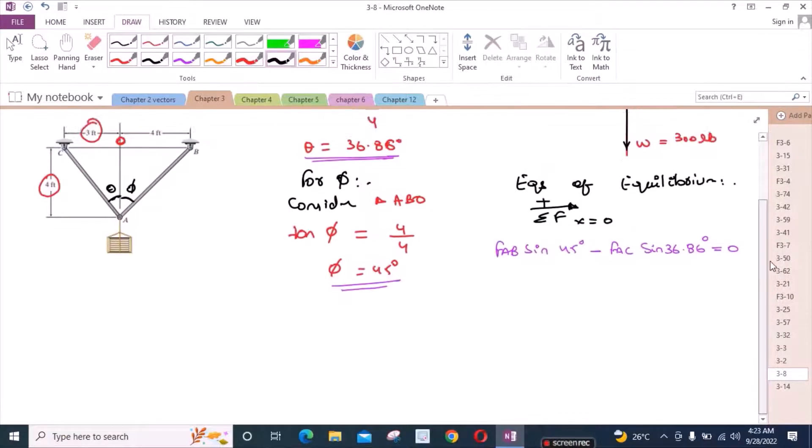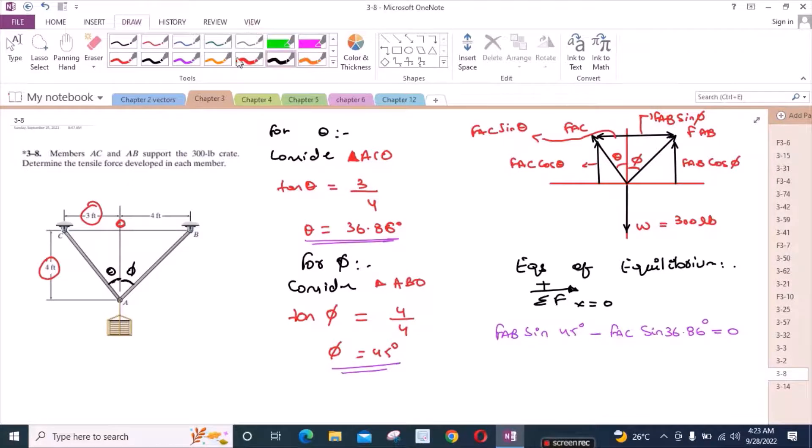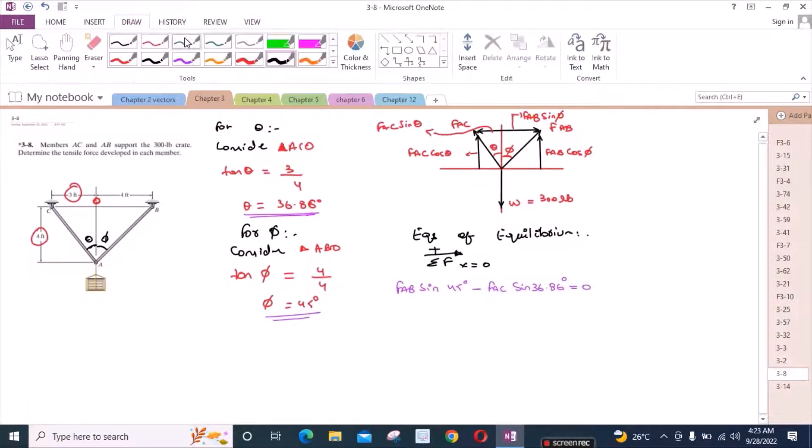Sum of the forces in y direction equals to zero. I'm considering up direction as positive. We have FAB cos 45 degrees plus FAC cos 36.86 degrees minus 300 equals to zero. Let's call this equation 2.